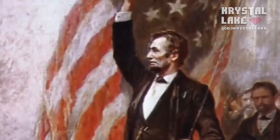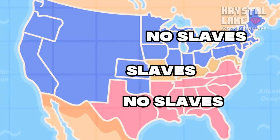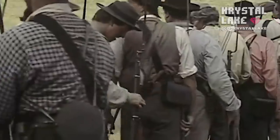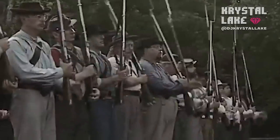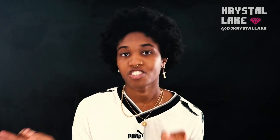Lincoln's order was to end slavery forever in the Confederate states only, meaning the border states could still have slaves. This was done so Lincoln could keep the border states happy and on his side while they fought the war against the Confederates. Slavery didn't actually end until the 13th Amendment on December 6th, 1865, which was a half year after Juneteenth.